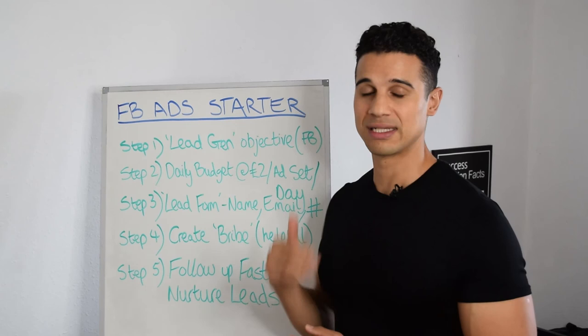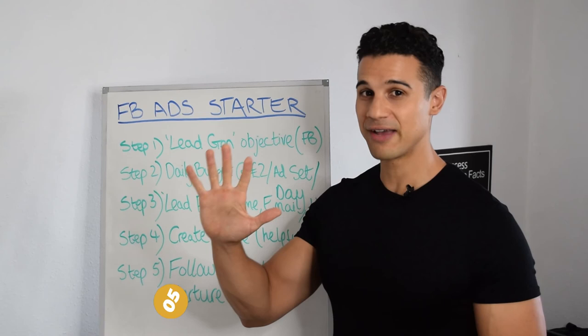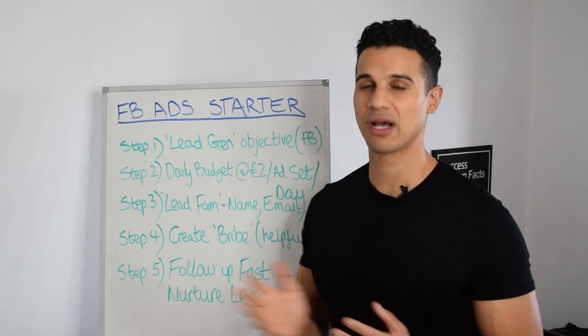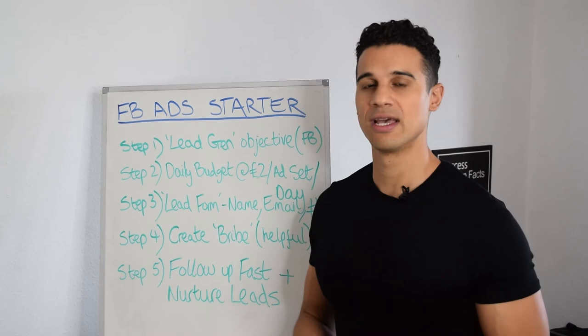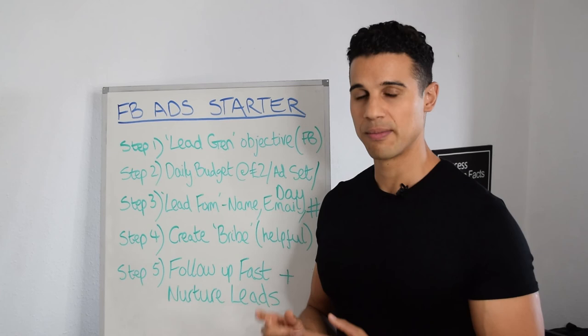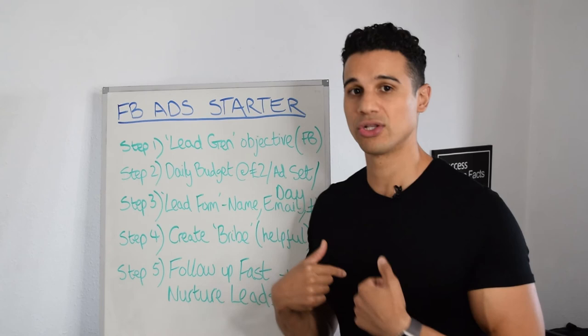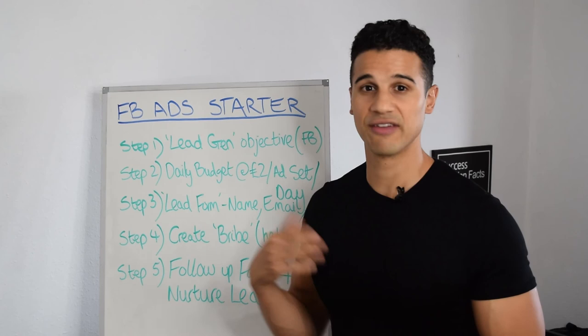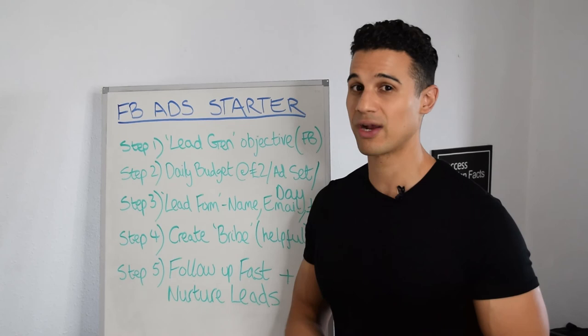Step five is to follow up fast. The key in this entire campaign is the follow-up process. Once you've got their name, email, and number, the next thing you want to do is follow up as quickly as possible, because the closer they are to their pain, the closer they are to taking action. You don't want to wait three or four days and then say 'hey, I saw you grab my e-book four days ago' — they've lost interest, moved on, and found somebody else. People's attention spans are so short these days; you really need to strike while the iron is hot, while you have their attention.